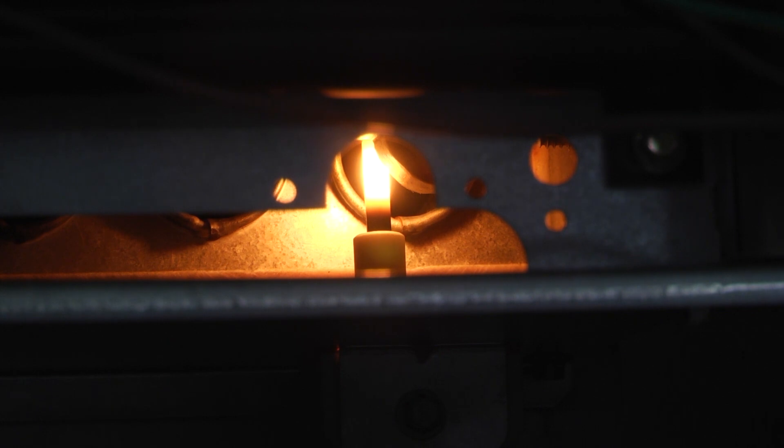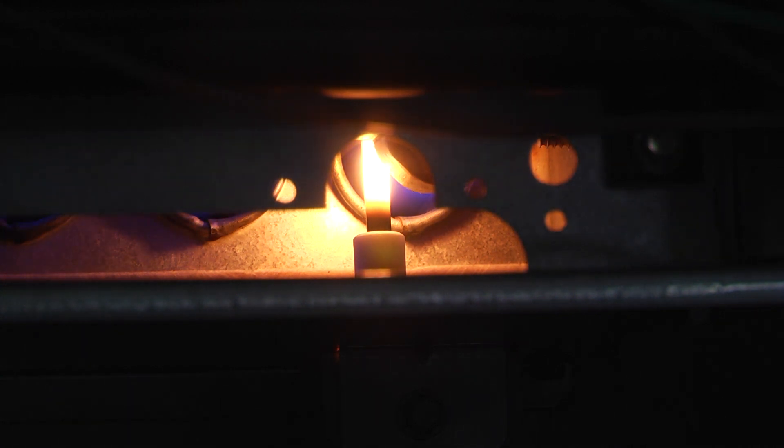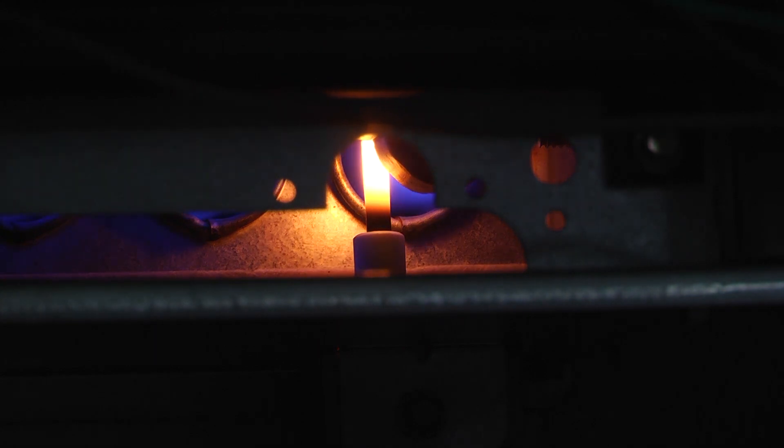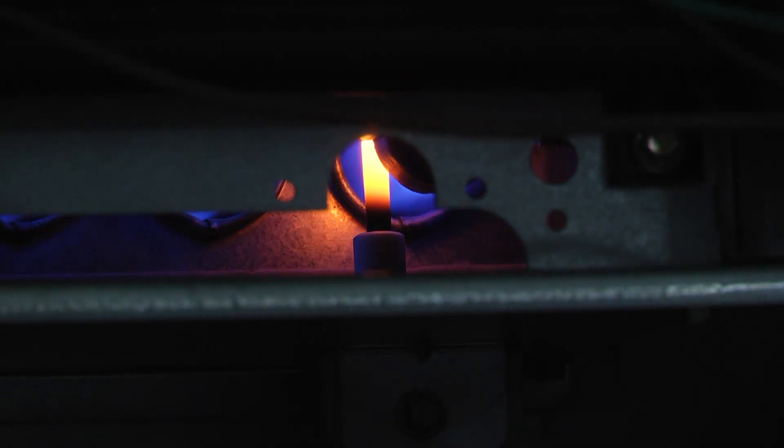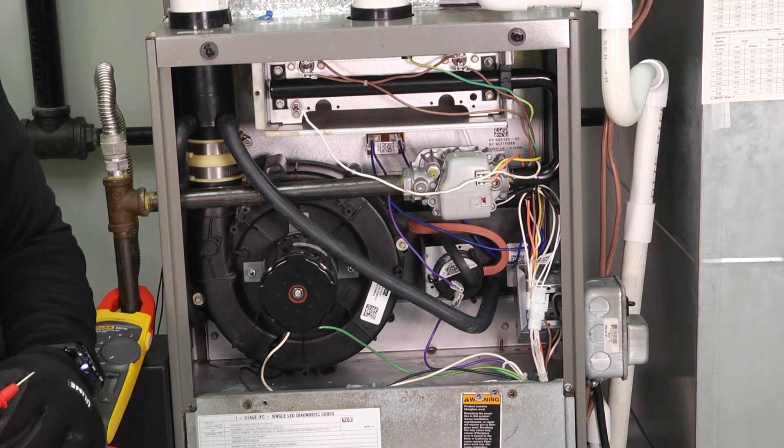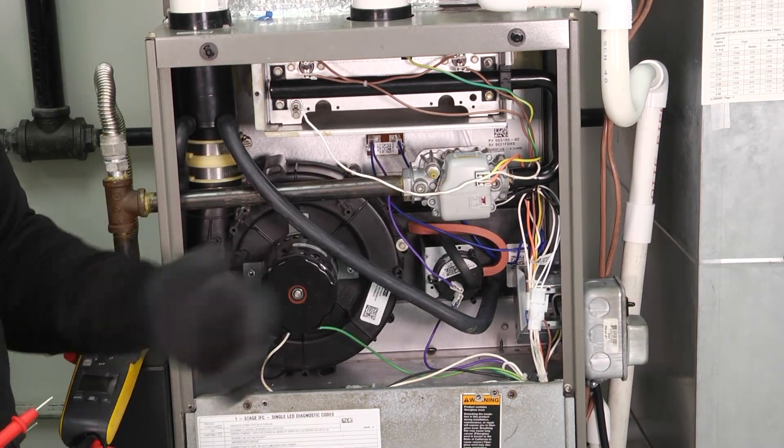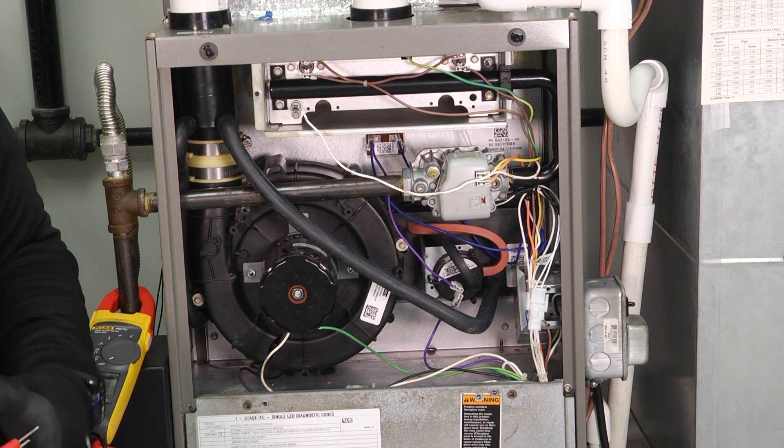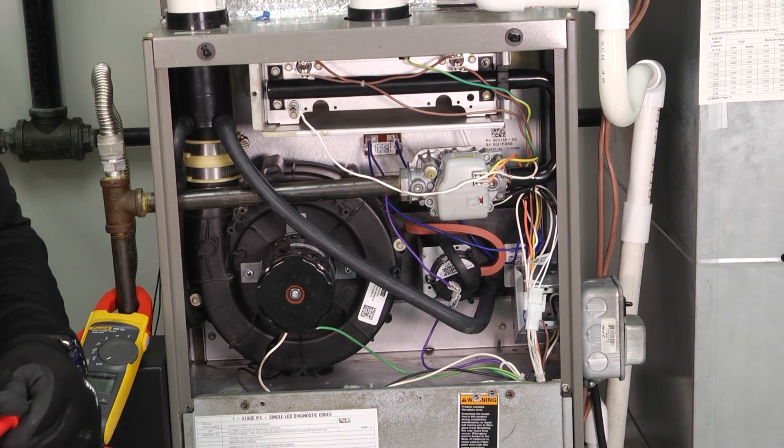And then once the gas valve opens, that helps us ignite our flame there. But sometimes we have to check those and figure out where their resistance is and where the tolerance is so that we can have a conversation to the homeowner about the integrity of their hot surface igniter. It's not a product that we clean or handle. We're just going to take an ohm reading on there and then that ohm reading is going to give us some information about that particular igniter.